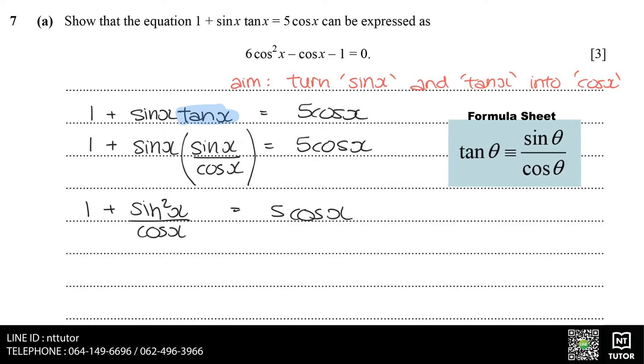After simplifying, we have a fraction in our expression. And if you look at the expression that we want to turn it into, it has no fractions. So the next approach should be to get rid of the fraction, and we can do that by multiplying both sides by the denominator.